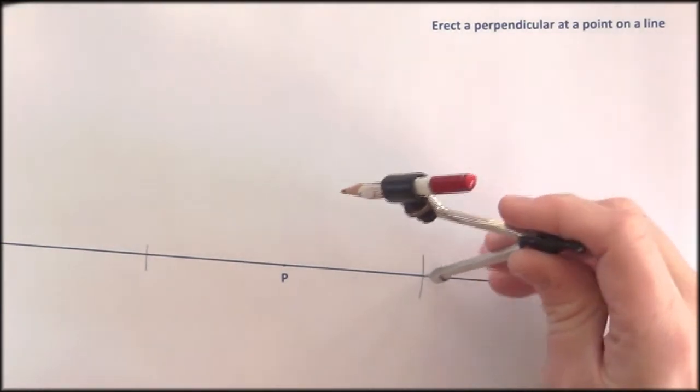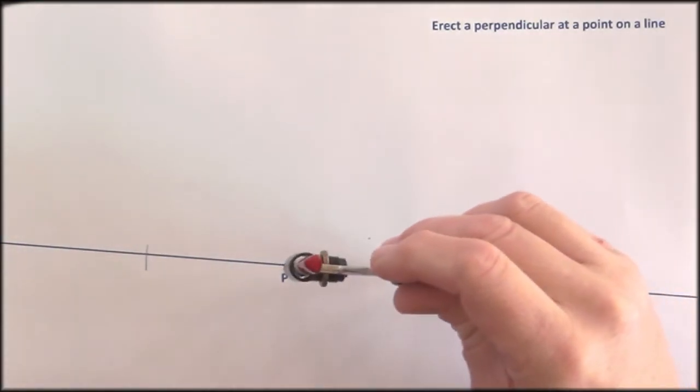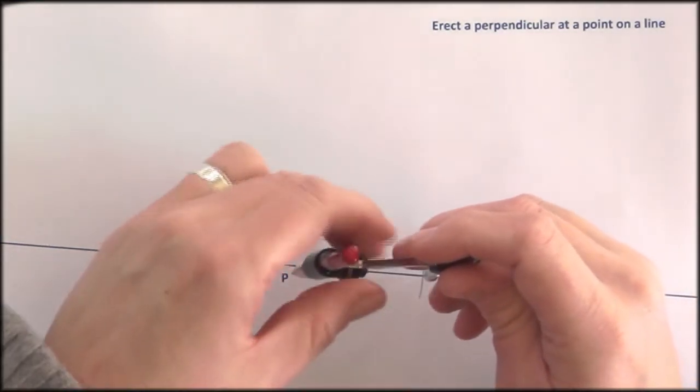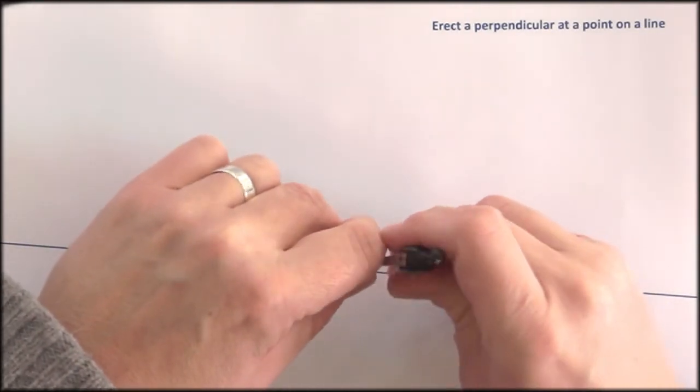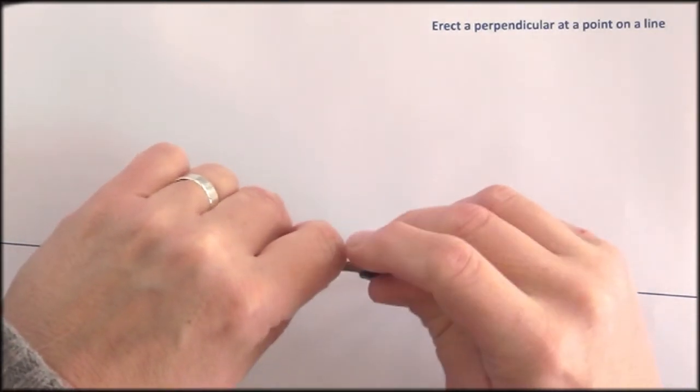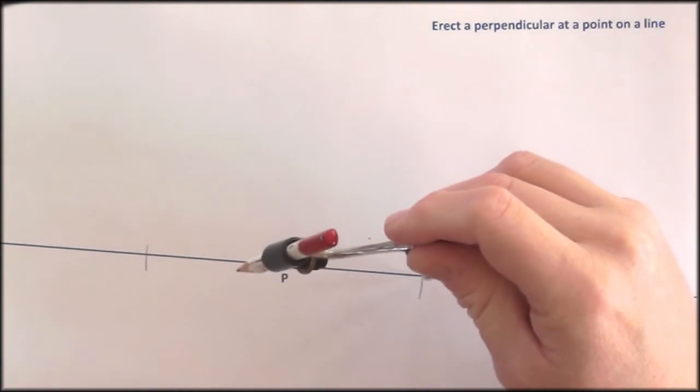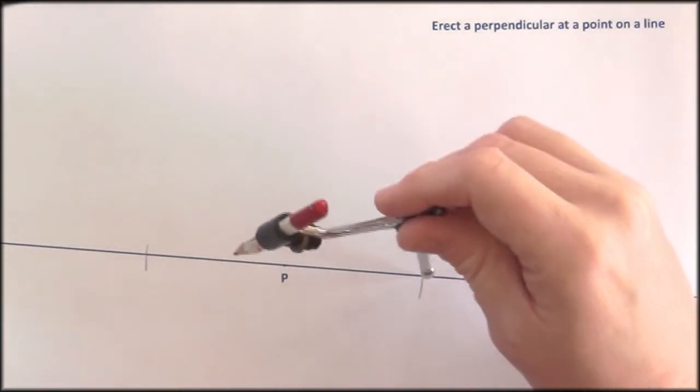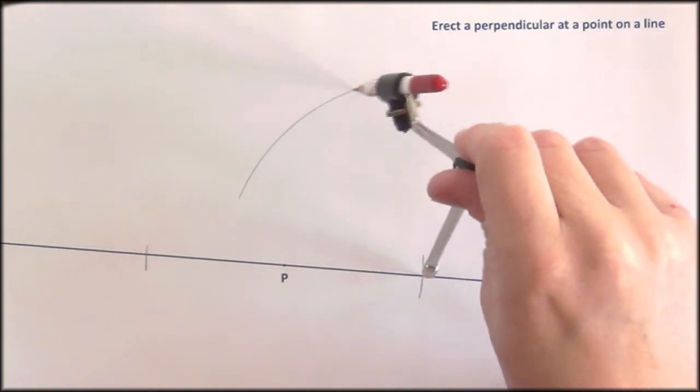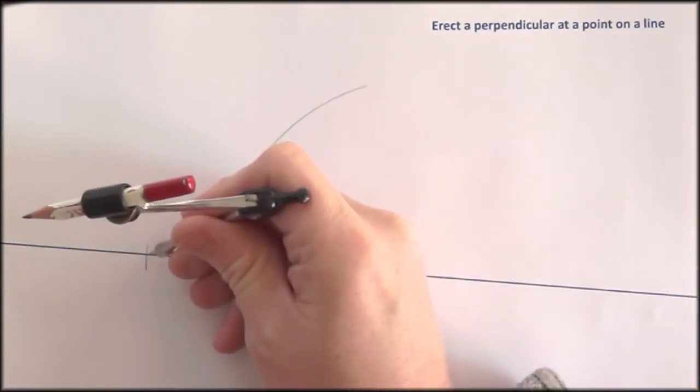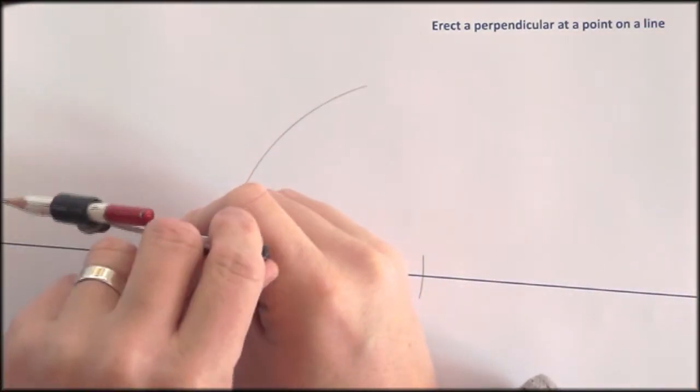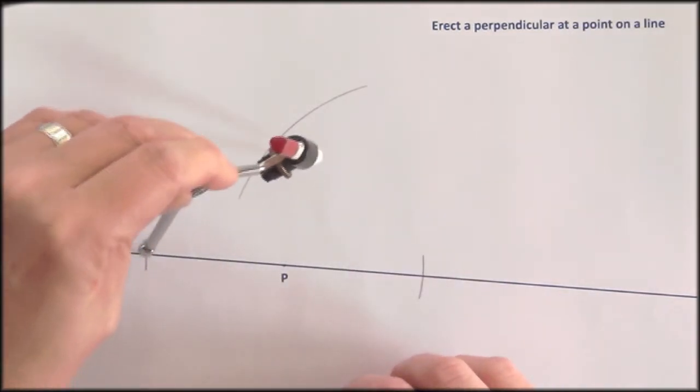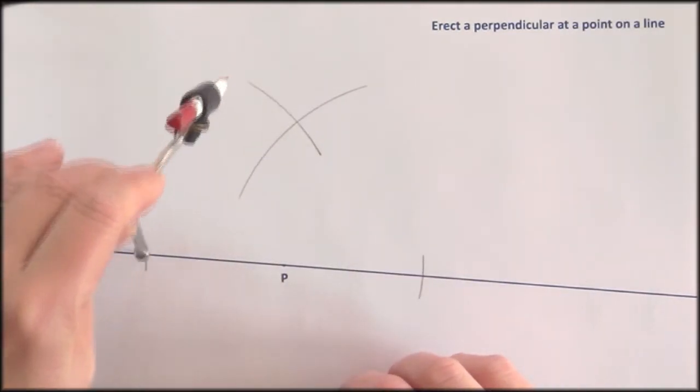So I'll put my sharp end on that intersection. Now this isn't big enough, is it? I need to expand my compass so it's greater than the distance between there and P. And now I can put my arc up there, go to the other intersection point there and cross that over.